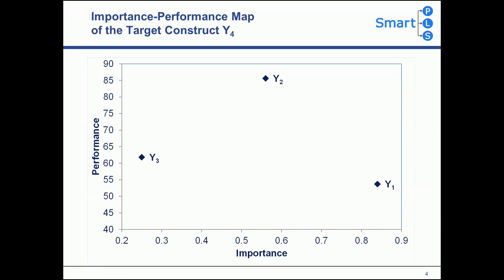By focusing on a key target construct, the importance performance map analysis identifies constructs that should receive highest priority for performance improvement. As a result, the performance of the key target construct also increases.